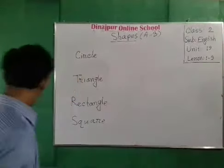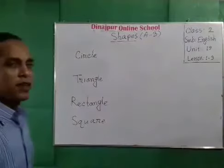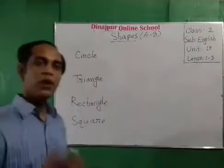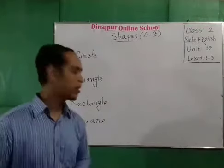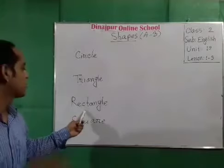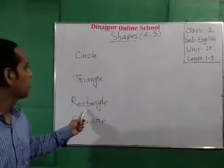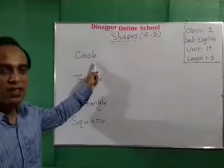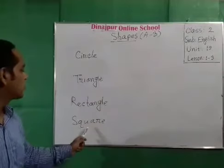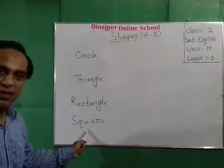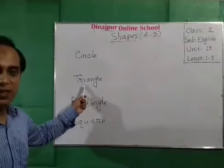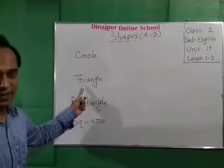Okay, now students, can you tell me the word? Now you tell me. What is this? Yes, this is rectangle. Now, what is this? Yes, circle. Now students, what is this? Square. Now, what is this, students? Triangle. Okay.